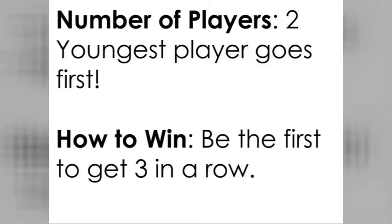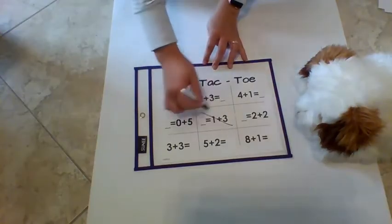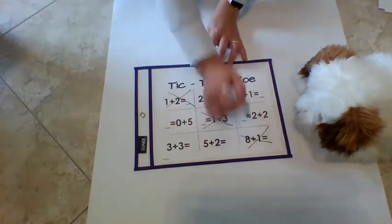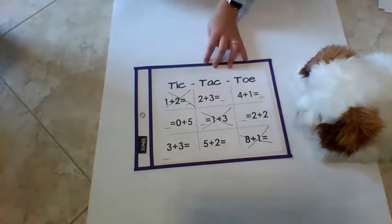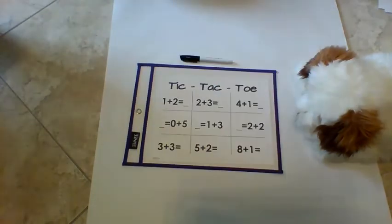How to Win. You want to be the first to get three of your symbols in a row, diagonally or across. First, players choose to be X or O.